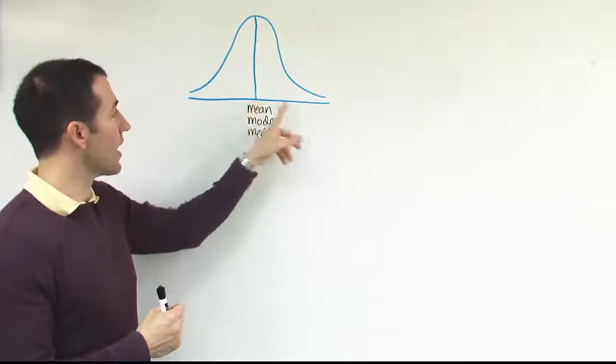And in the case of the median, it's the number, literally, in the middle of the data set, so that half the values are above, half the values are below. So it makes sense that for this curve, these guys are all in the same place.